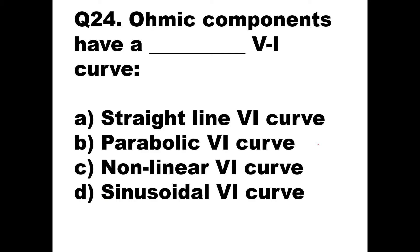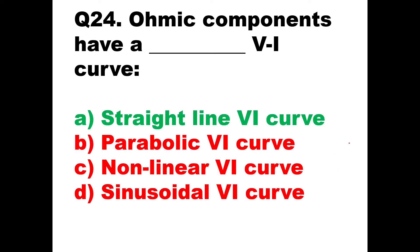Question number 24: ohmic components have a dash VI curve. The options are straight line VI curve, parabolic VI curve, non-linear VI curve, and sinusoidal VI curve. Ohmic components will always have a straight line on a graph of V and I. So option A, straight line VI curve, is the right answer.